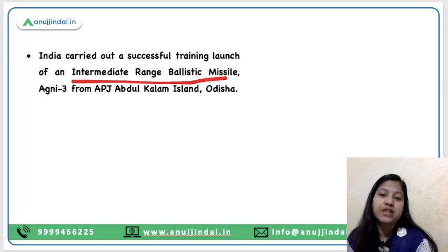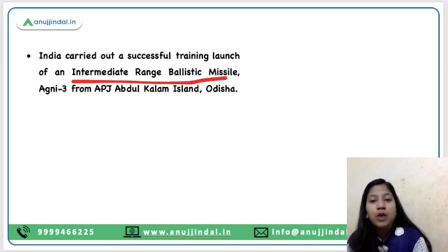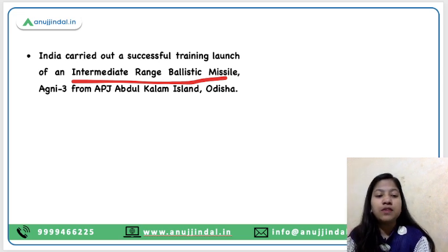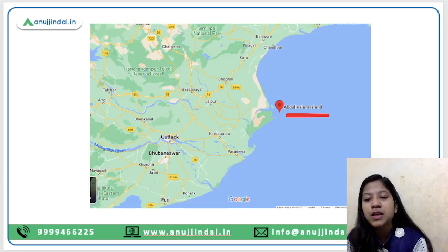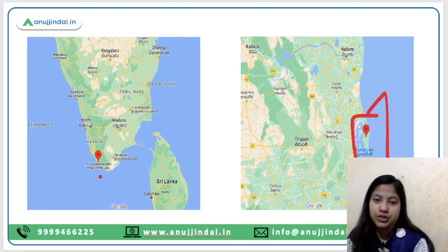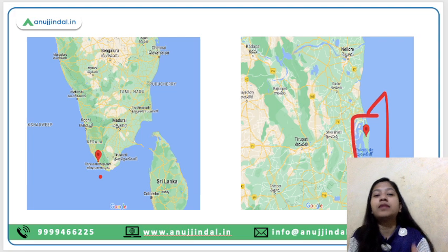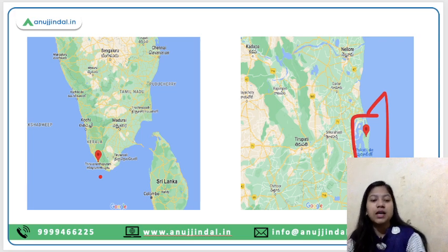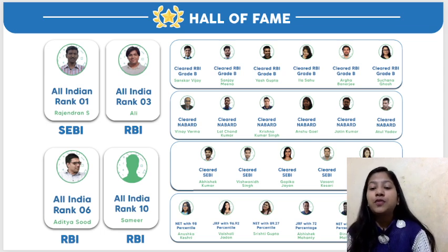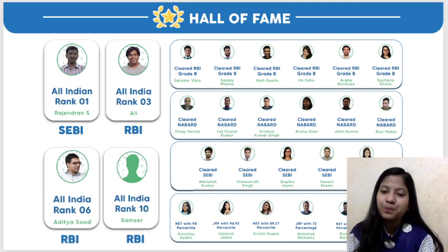These are the five missiles launched under the program to make India self-reliant in missile and defense technology. There are three prime locations from where DRDO and ISRO conduct missile and rocket tests: APJ Abdul Kalam Island in Odisha, Thiruvananthapuram in Kerala, and Sriharikota in Andhra Pradesh. This concludes the video. I hope you enjoyed the content — thank you so much for watching, and if you have any queries or comments, please mention them in the comment section below.